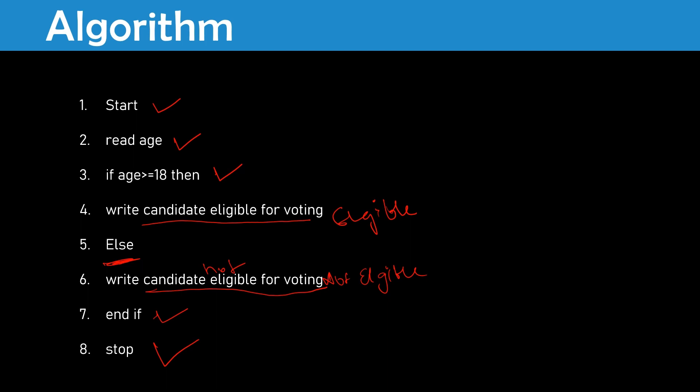Now we are changing these statements into a C program. Don't think that this is only a C program — it is not Java or Python specific. If you learn the algorithm, you can write any program; just the syntax changes, everything else remains the same. If you get the algorithm, you can write the code.